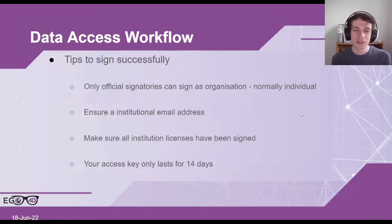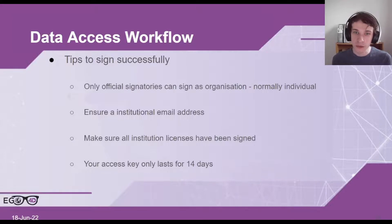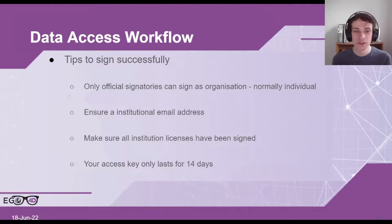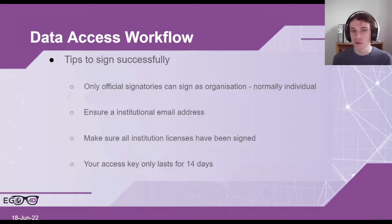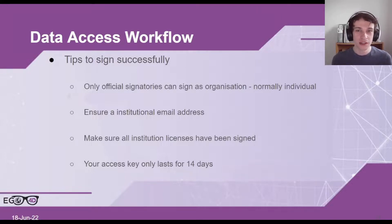Here are some tips on how to sign in successfully. Only official signatories can sign as an organization, and in most cases you'll be signing as an individual. Ensure you use your institutional email address, as this ensures that you're using the dataset for research and will help with your application. Make sure that all the institutional licenses have been signed — we cannot give you access to specific parts of the dataset recorded by only certain universities, it's an all or nothing thing. Your access key only lasts for 14 days, and whilst you can apply for more access keys without having to re-sign, you will have to do so.